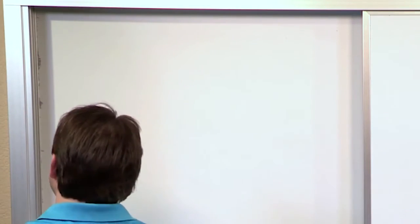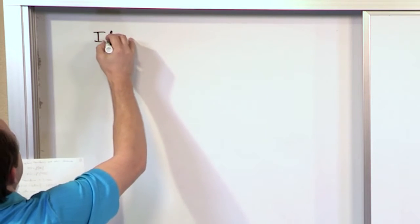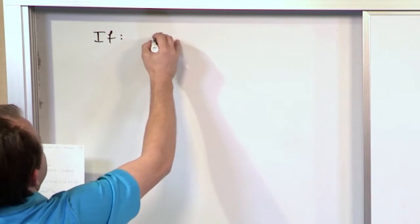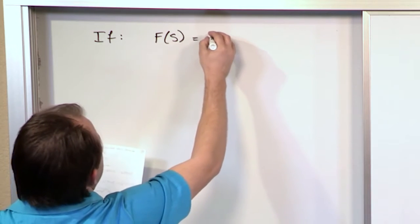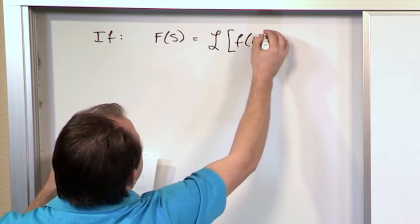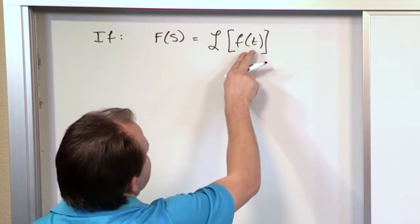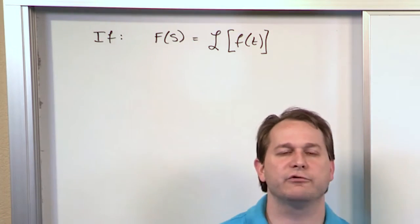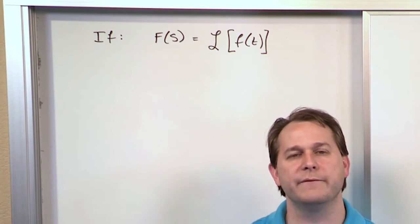Before I do that, I want to mention a few things. The notation we've been using is: the Laplace Transform is capital F as a function of S, and it's equal to the Laplace Transform of f of t. So far, all we've been concerned with is taking a function of time, performing the integration on it, and getting a function of S — that's the Laplace Transform of the function of time.